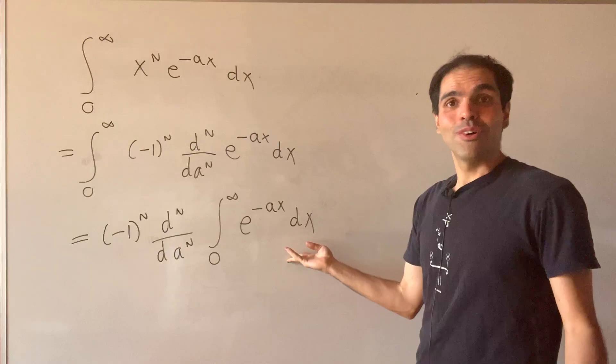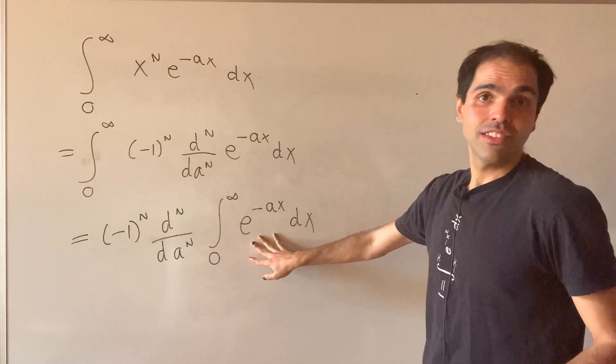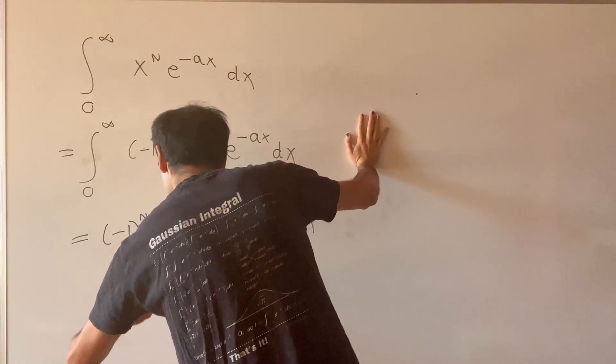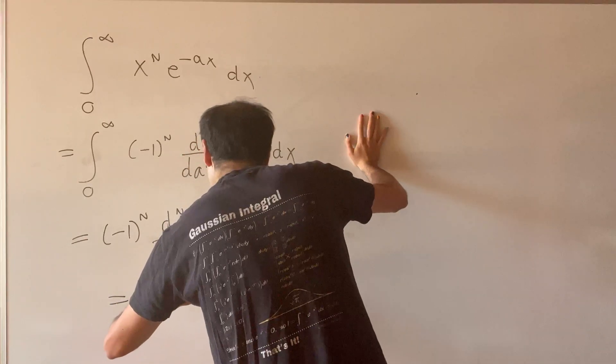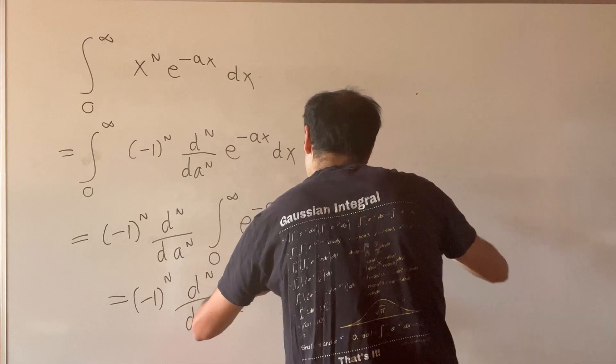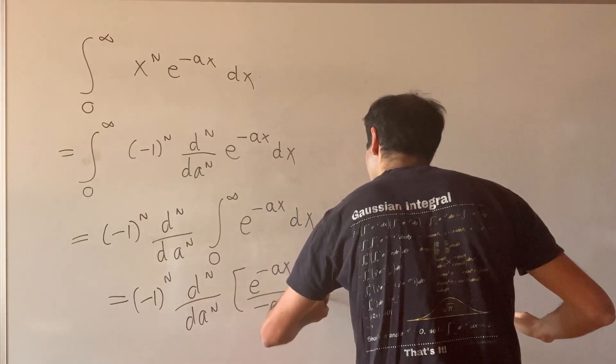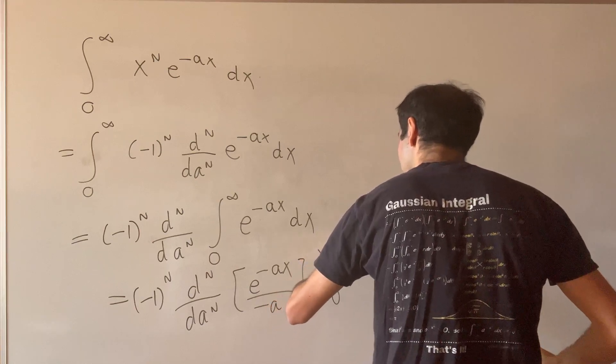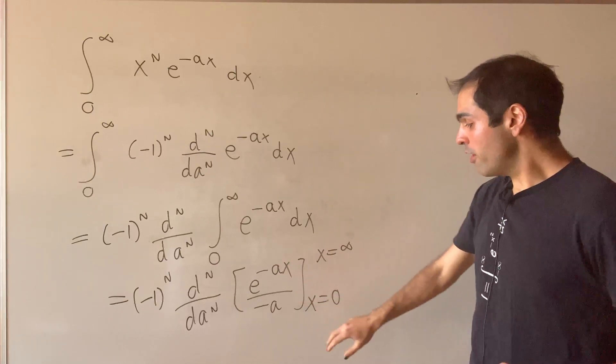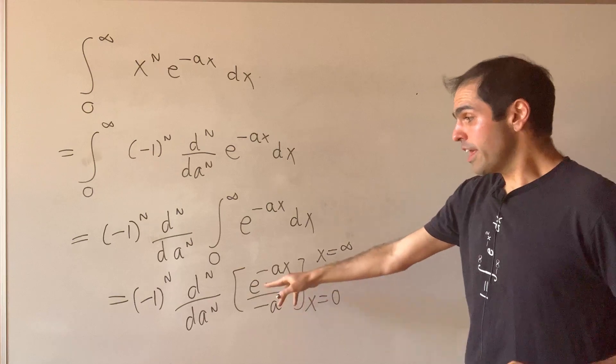And this integral is not hard to evaluate, because an antiderivative is e to the minus ax over minus a. So we have minus 1 to the n times dn over da to the n of e to the minus ax over minus a, evaluated from 0 to infinity. As x goes to infinity this becomes 0, and as x goes to 0 this is 1.